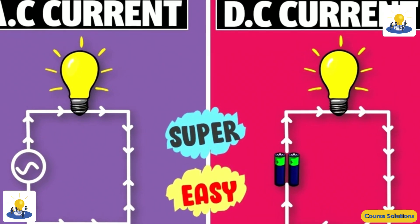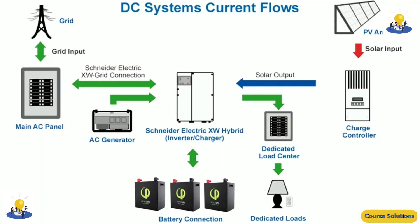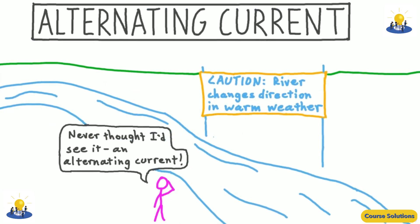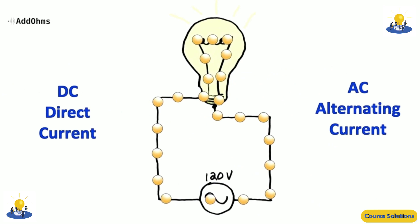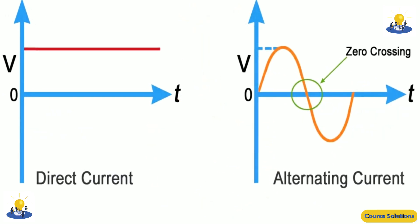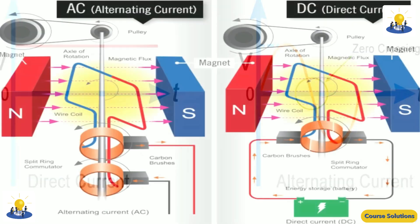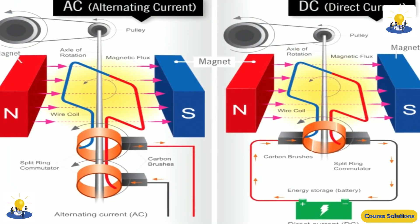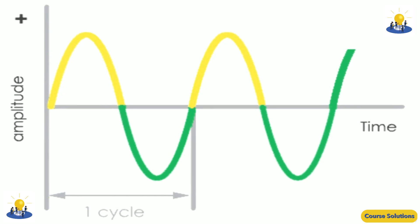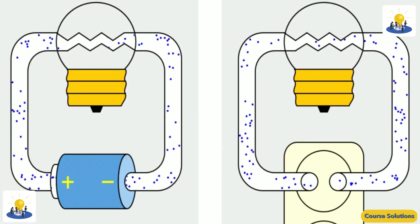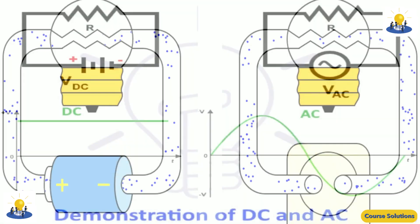The abbreviations AC and DC are often used to mean simply alternating and direct, as when they modify current or voltage. Direct current may be converted from an alternating current supply by use of a rectifier, which contains electronic elements, usually, or electromechanical elements, historically, that allow current to flow only in one direction. Direct current may be converted into alternating current via an inverter.